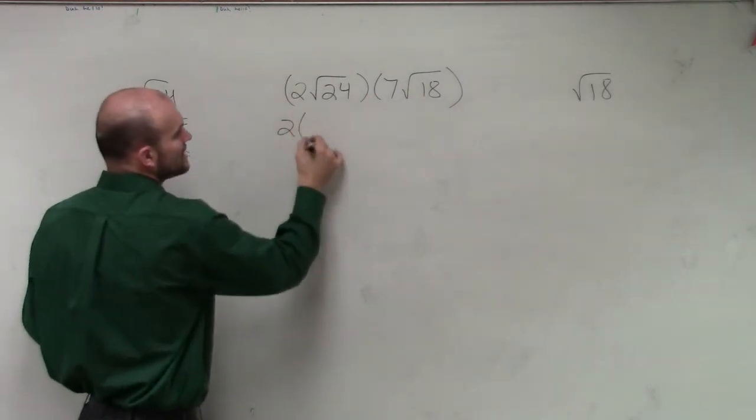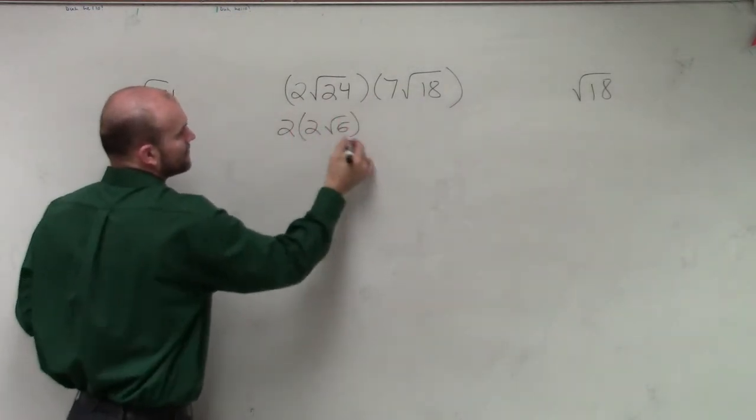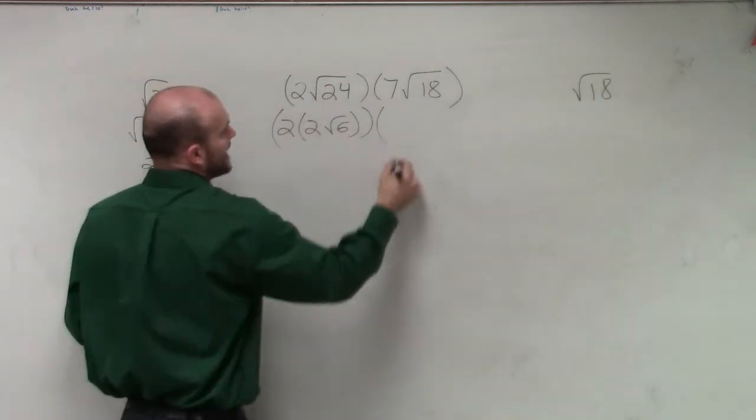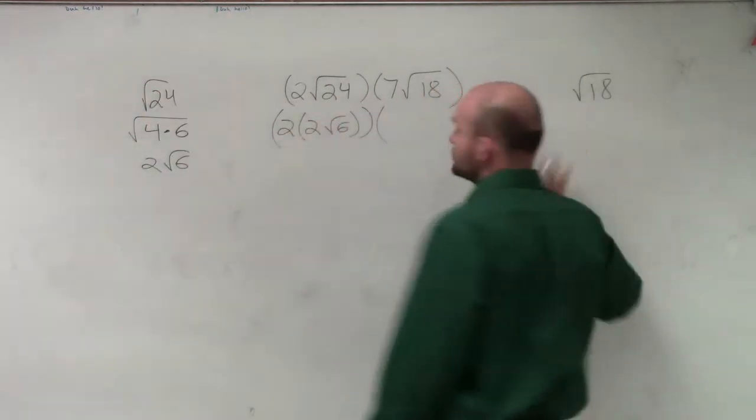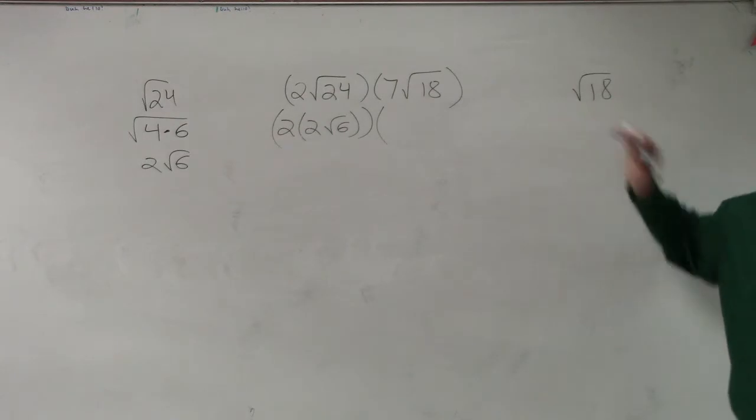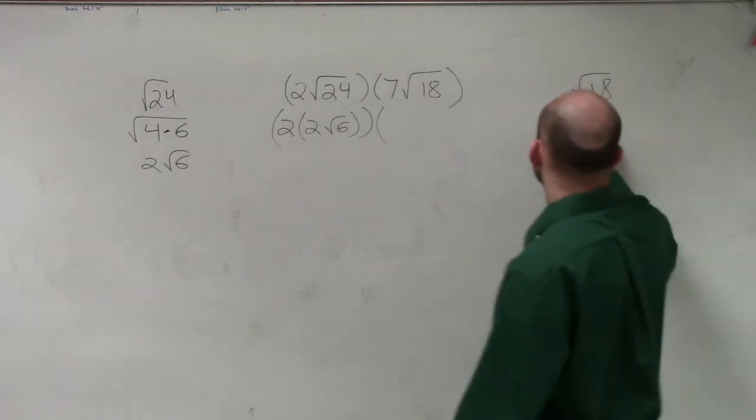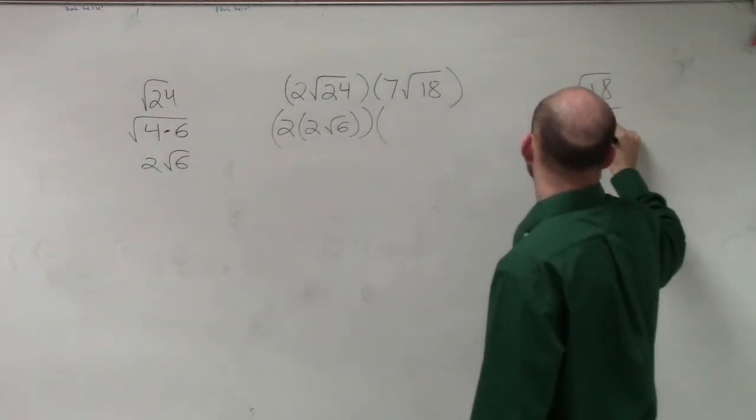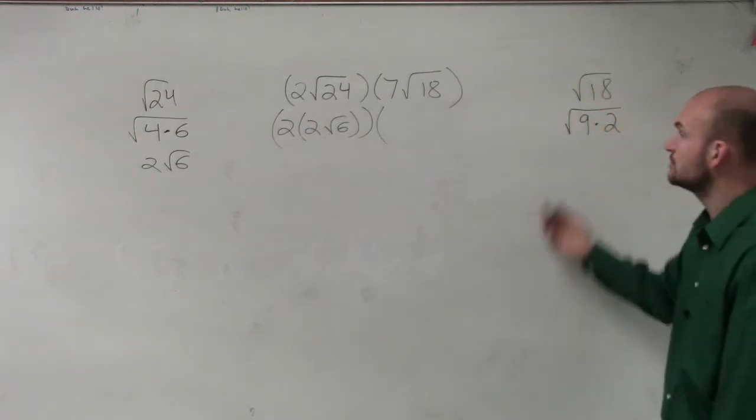So I can say 2 times 2 radical 6 times square root of 18. What's the largest number I can take the square root of that divides in 18? 9 times 2. Square root of 9 is 3.